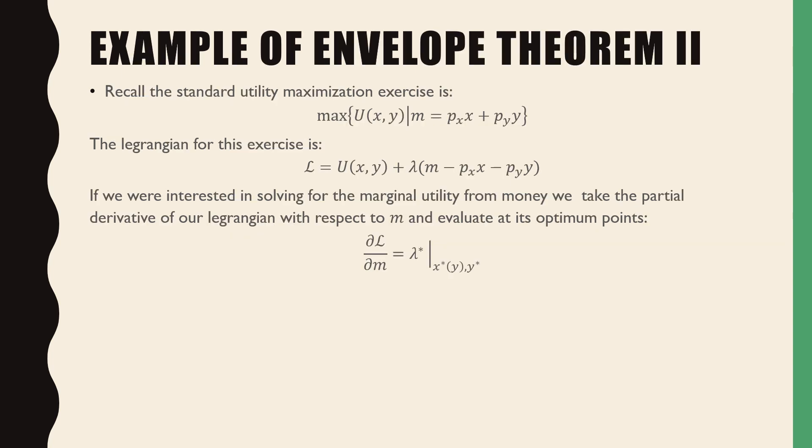So an example of this is the following. Recall that the standard utility maximization problem for this exercise is maximize U(x,y) subject to m = p_x x + p_y y, and the Lagrangian for this exercise is L = U(x,y) + λ(m - p_x x - p_y y).